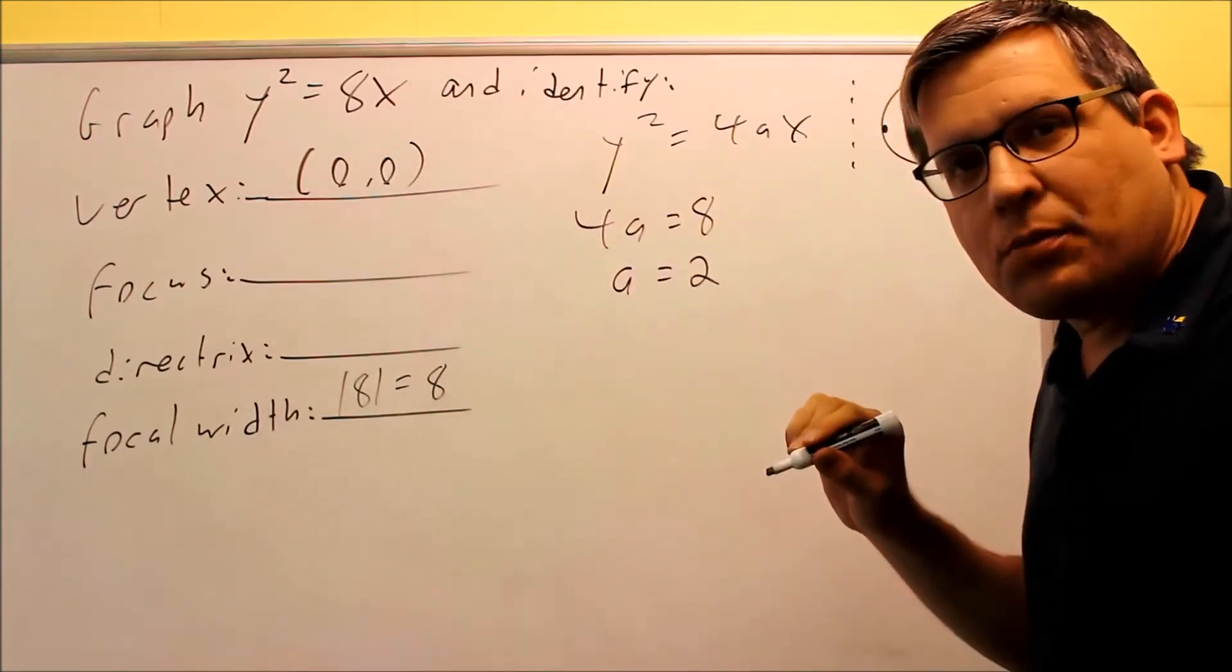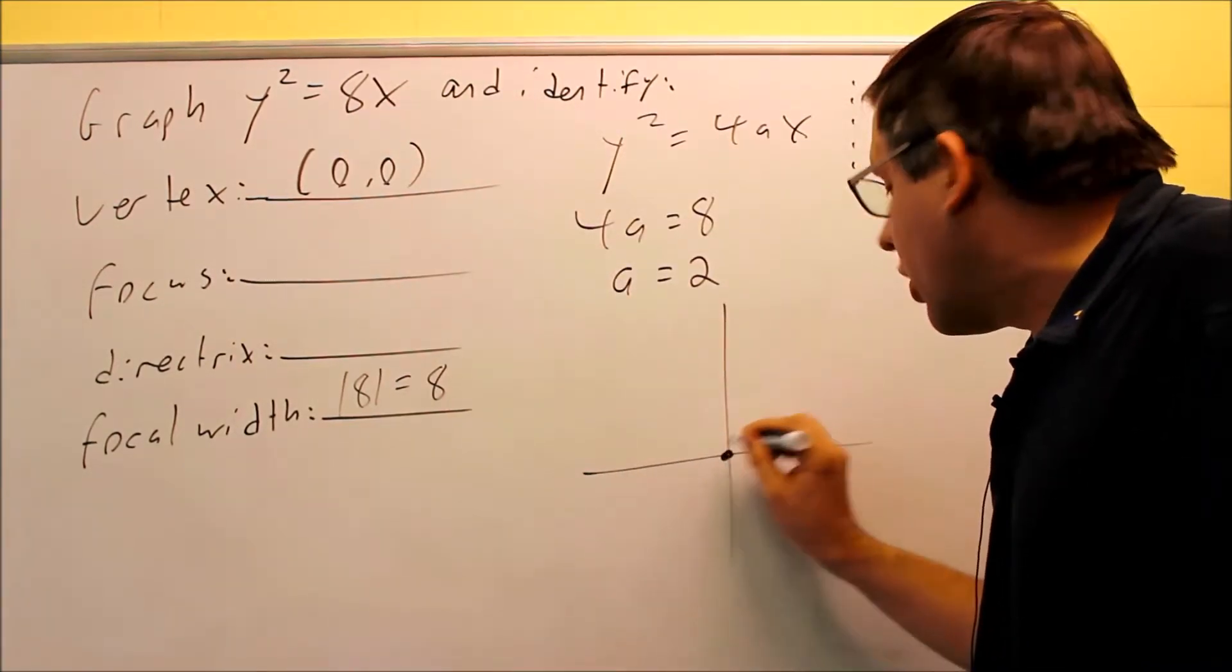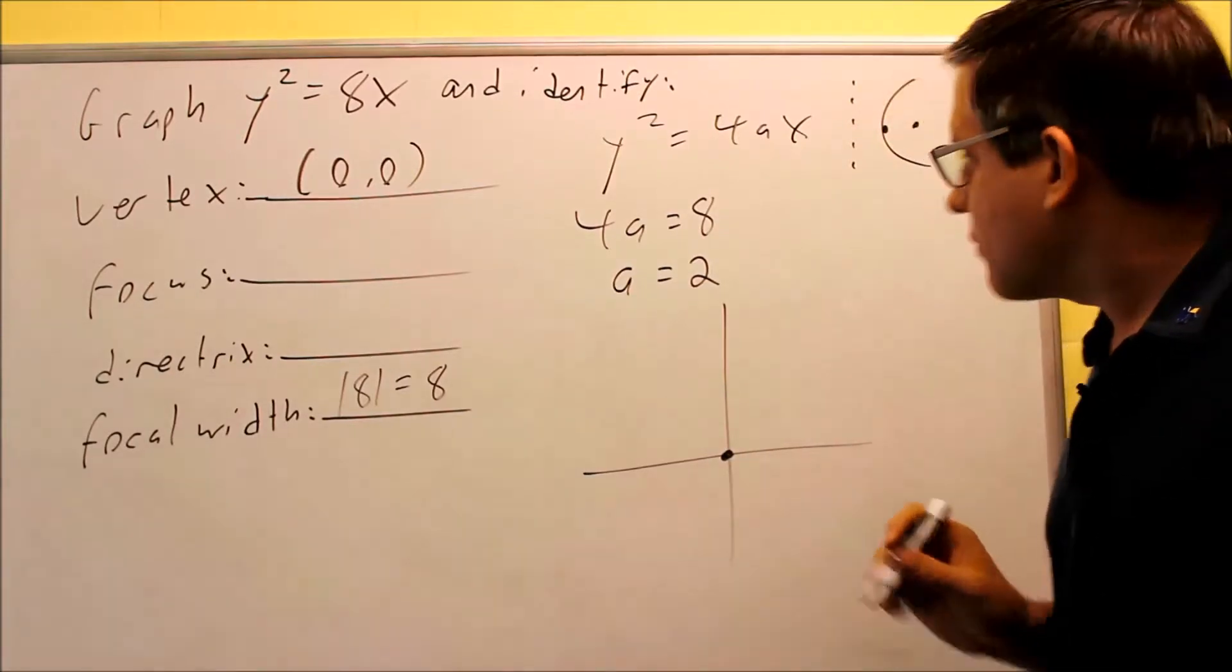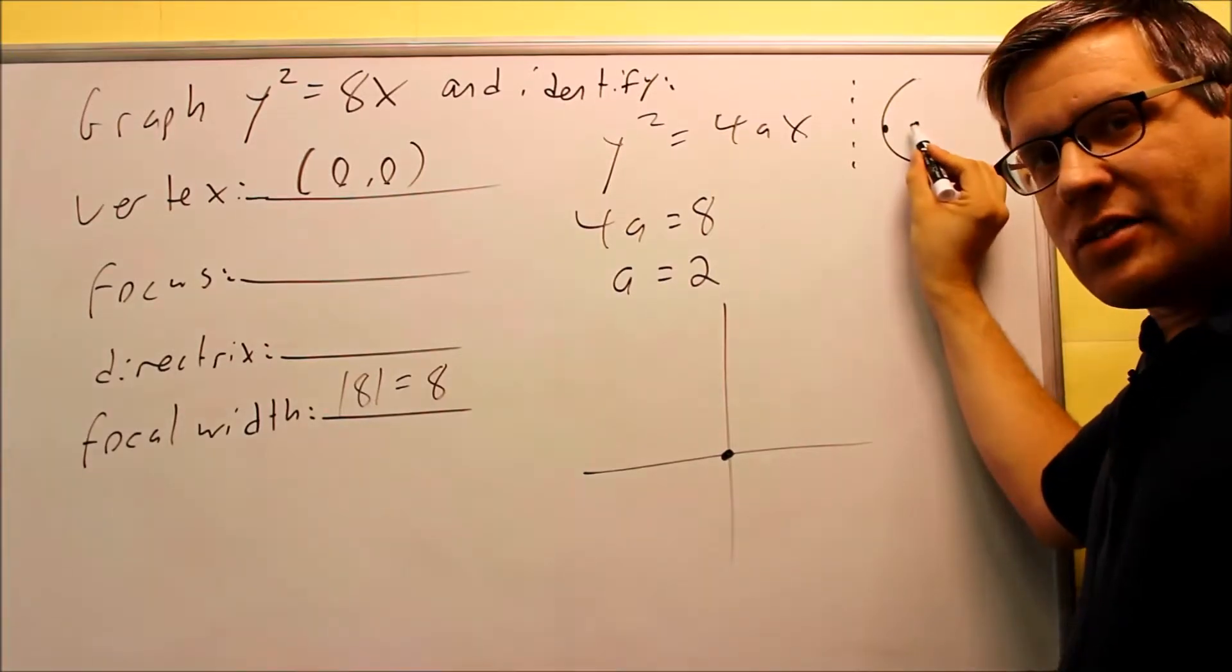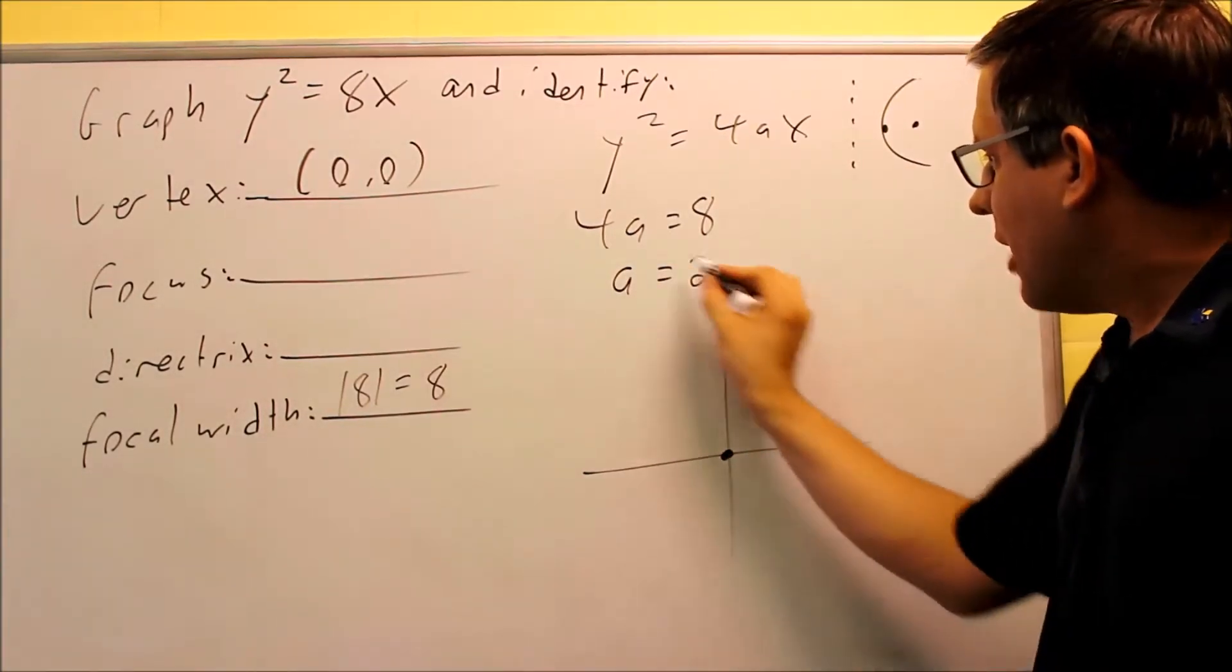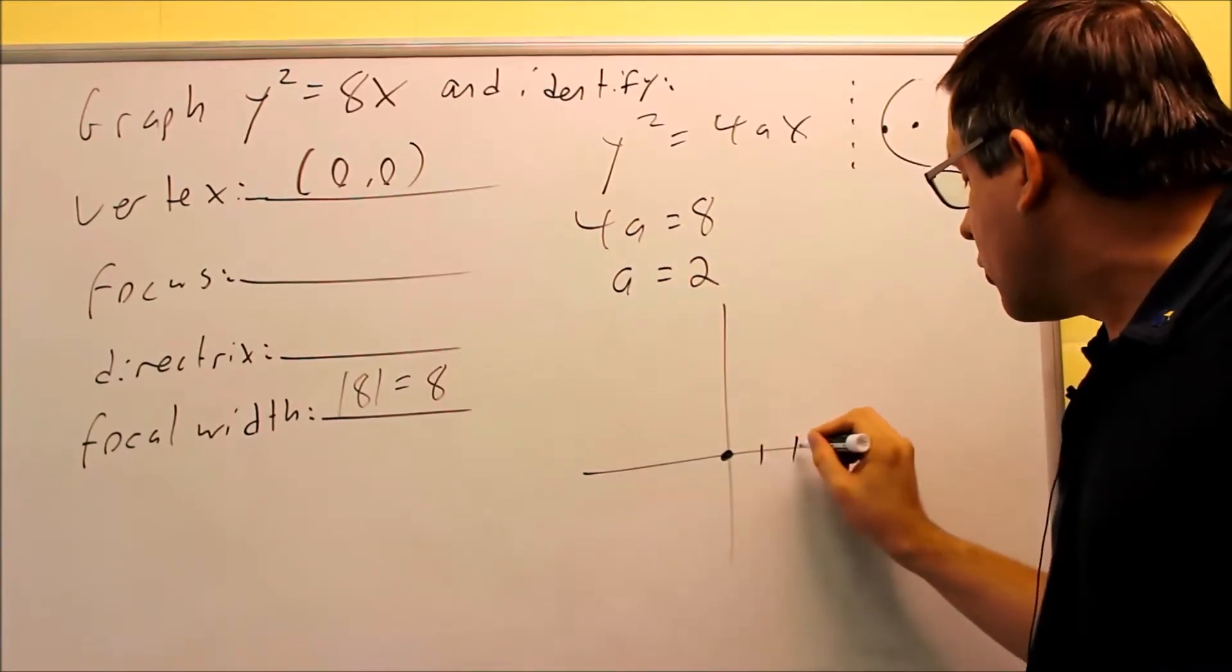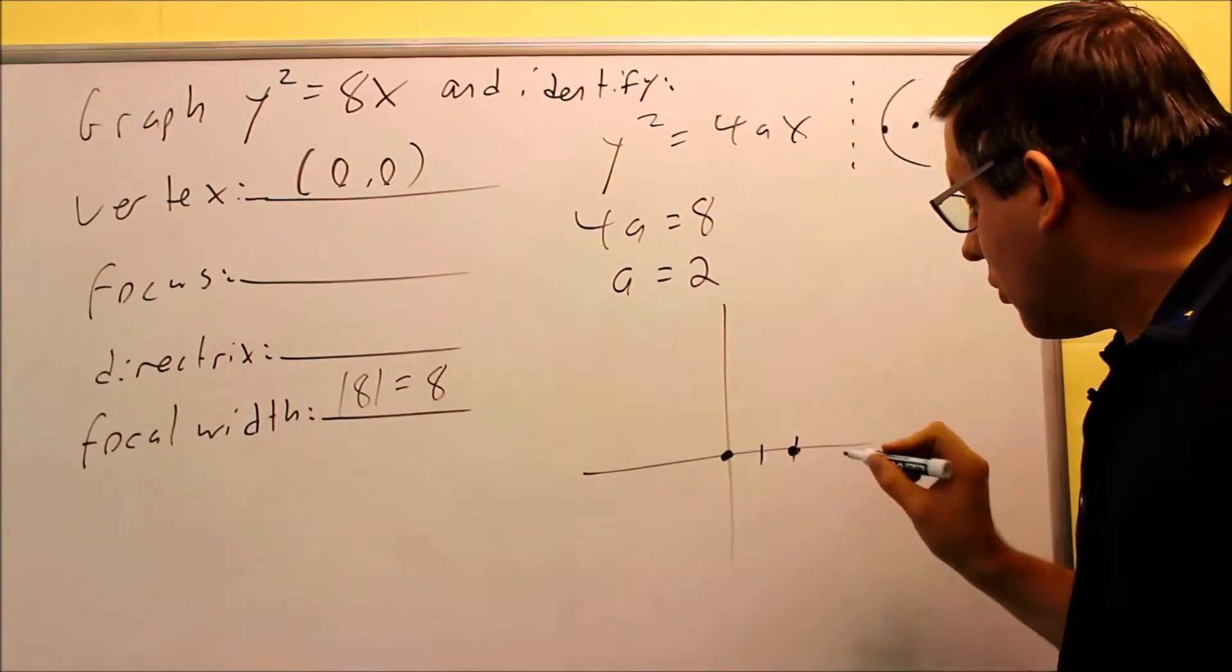First, you want to always begin by plotting the vertex. So the vertex is going to be right there at 0, 0. This model says that I need to go to the right to get the focus. So what you do is you start here, and because the a value is 2, we're going to go two places to the right, and we're going to make a dot there. That's going to be your focus.